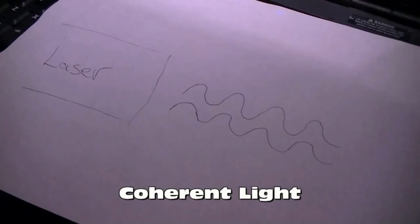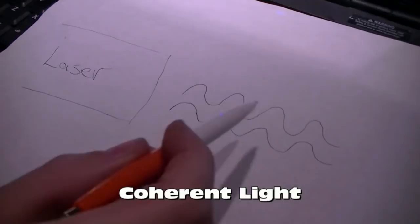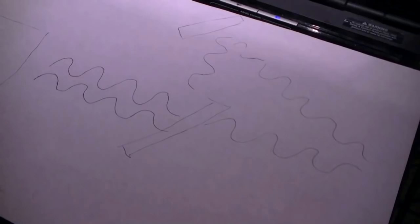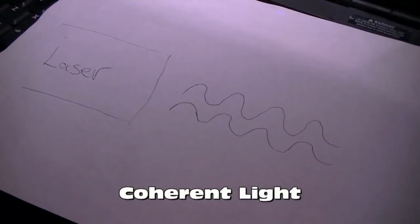Let's start with interference first. Holograms are made with lasers, and lasers emit coherent light. Simply put, coherent light is light that's all of the same frequency and parallel and the same phase.